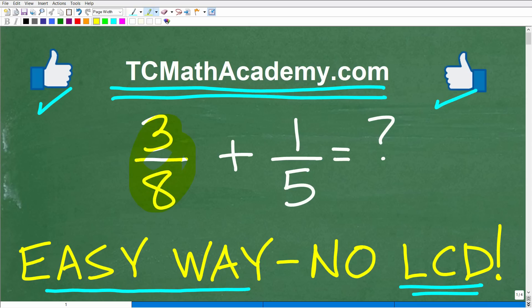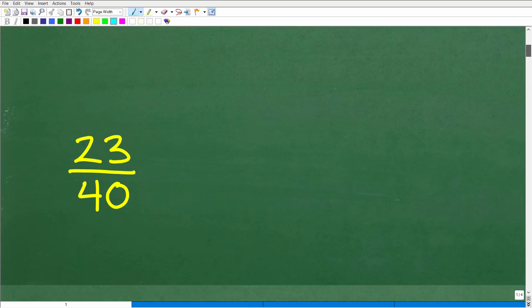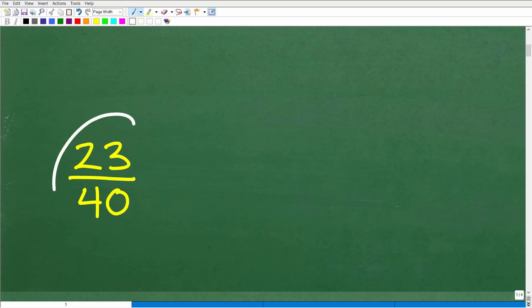Okay, so here we have three eighths and we want to add it to one fifth. Pretty straightforward problem. Let's go ahead and take a look at the answer right now. The answer is 23 over 40.